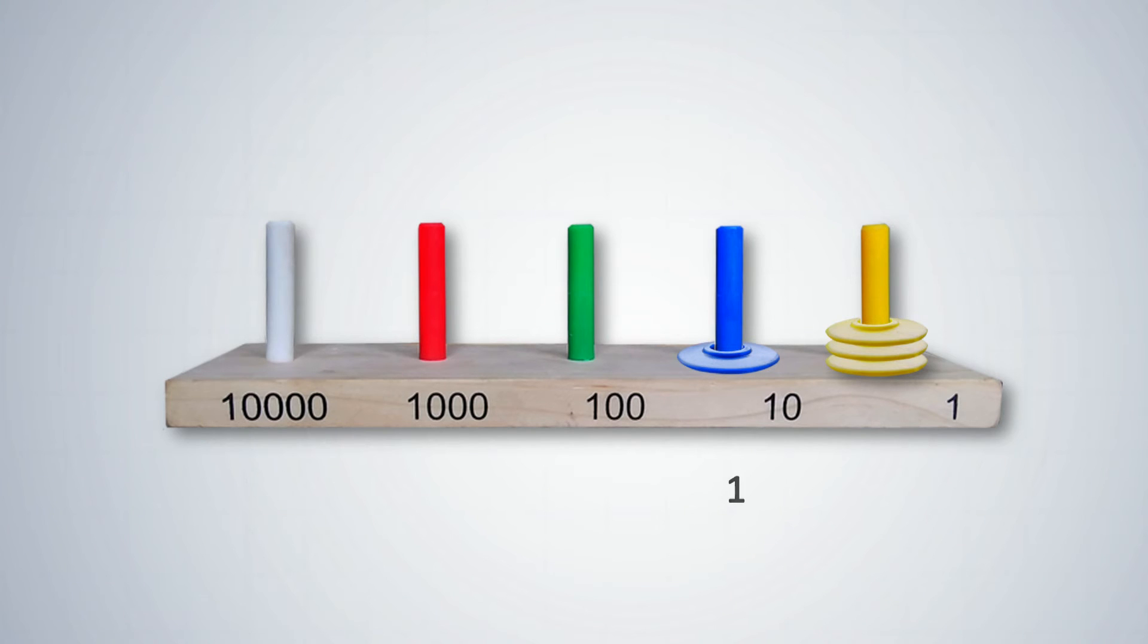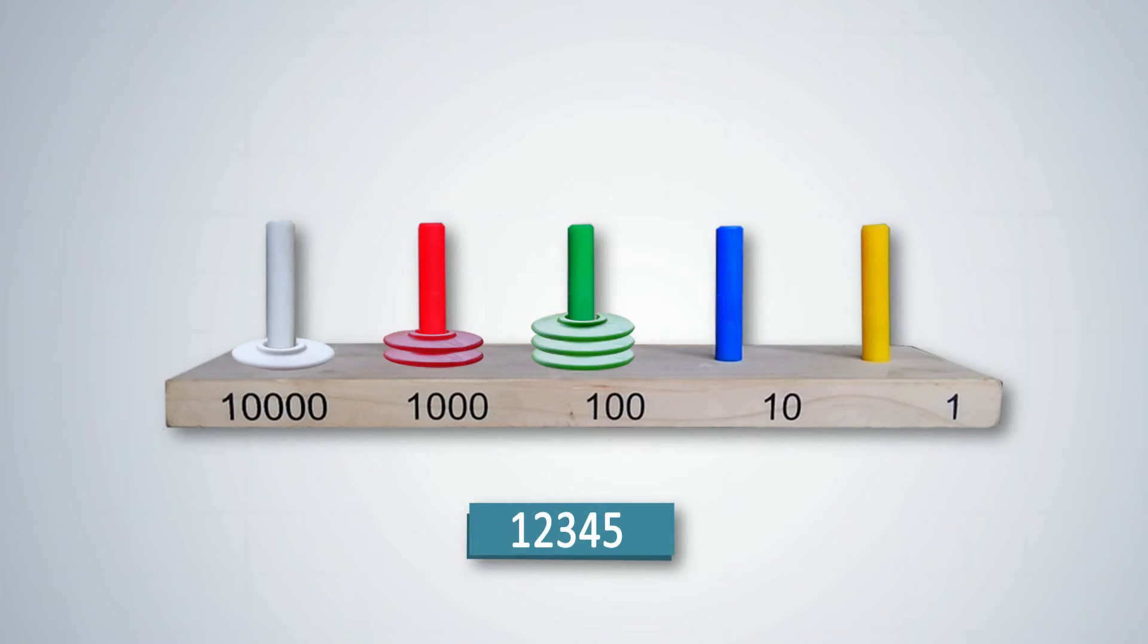So we now have 1 ten in the 10s place and 3 ones in the 1s place representing 13. This process is repeated for digits in every place. 10 tens or 10 blue rings are replaced by 1 ring representing 100. 10 hundreds or 10 green rings must be replaced by 1 red ring representing 1000. 10 thousands or 10 red rings must be replaced by 1 white ring representing 10,000. Place relevant colored rings on the abacus and let students say aloud the number it represents. For example, 12,345.